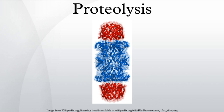Cleavage of precursor proteins: many proteins and hormones are synthesized in the form of their precursors — zymogens, proenzymes, and prehormones. These proteins are cleaved to form their final active structures. Insulin, for example, is synthesized as proproinsulin, which yields proinsulin after the signal peptide has been cleaved. To form mature insulin, the proinsulin is then cleaved at two positions to yield two polypeptide chains linked by two disulfide bonds. Proinsulin is necessary for the folding of the polypeptide chain, as the two polypeptide chains of insulin may not correctly assemble into the correct form, whereas its precursor proinsulin does.